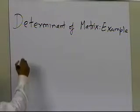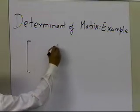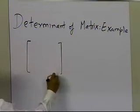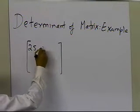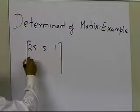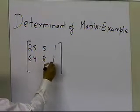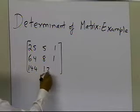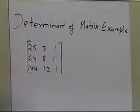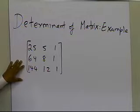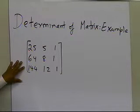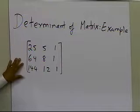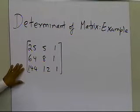I'm going to take an example. Suppose somebody says go ahead and find the determinant of this matrix: 25, 5, 1; 64, 8, 1; 144, 12, 1. What we want to do is follow the steps of forward elimination as given for the naive Gaussian method and see how we can find the determinant of this matrix.